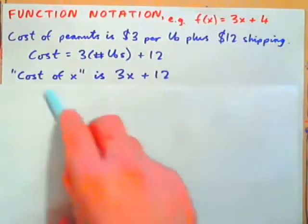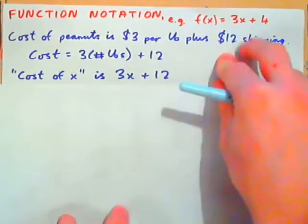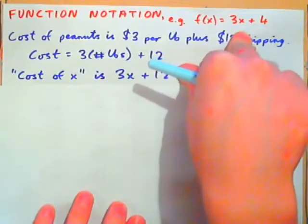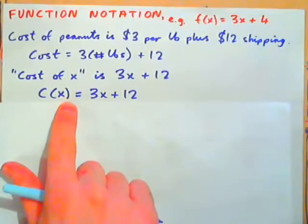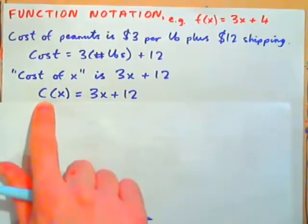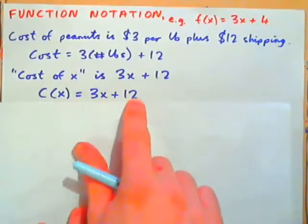So, we could say cost of x is 3x plus 12. Now, in math, we have this notation that looks like this: C, parenthesis x, close parenthesis, equals 3x plus 12. And what that is saying is cost of x, C of x. Cost of x is 3x plus 12.